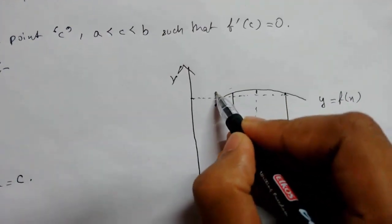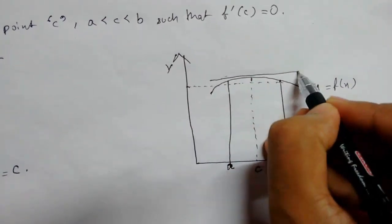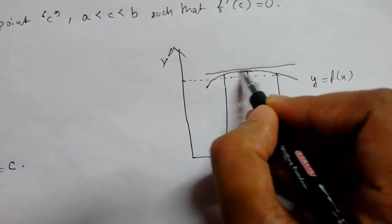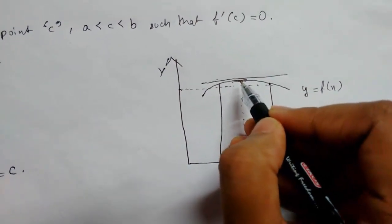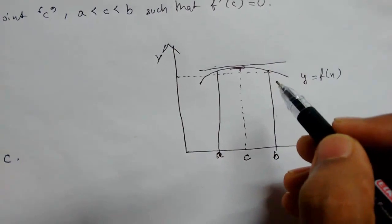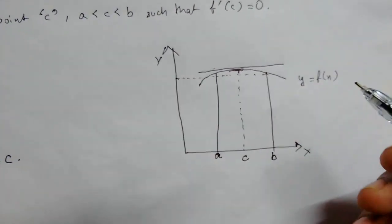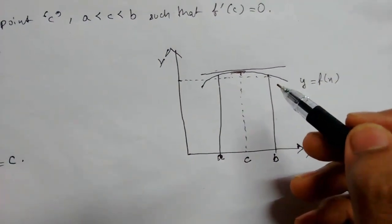So we can say that the tangent at the point c makes an angle zero degrees with the x-axis. We can also say that the tangent at c is parallel to the x-axis.